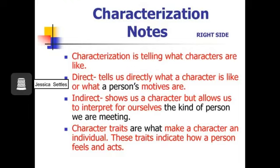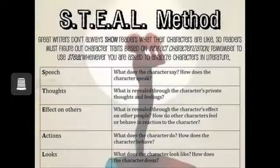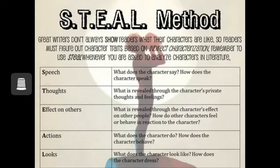Characterization is the description of characters in a work of literature. There are two types: direct characterization and indirect characterization. Direct is when the play or story tells the audience what the character is like by stating it with plain details and words. Indirect characterization allows us, the audience, to interpret details about the character for ourselves. When writing indirect characterization, writers will use the STEEL method to describe characters.